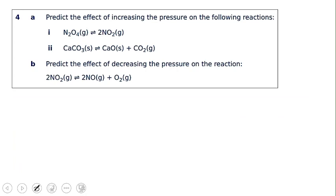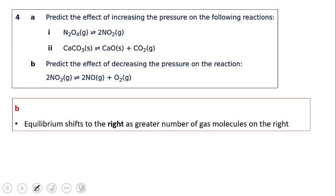Part (b): Predict the effect of decreasing pressure. Decreasing pressure increases volume, so the reaction favors the side with more moles of gas. For this equation, we have 2 moles on the reactant side and 3 moles (2+1) on the product side. Therefore, equilibrium shifts toward the right — the product side — where there are more gas molecules.